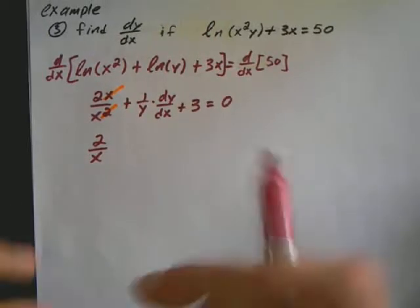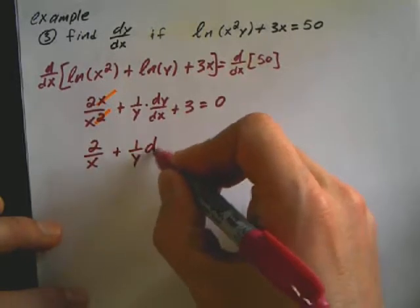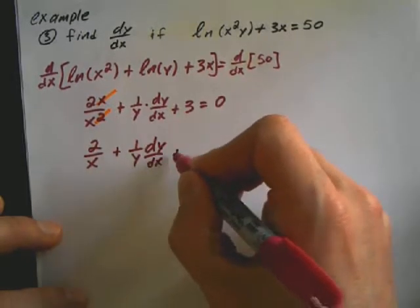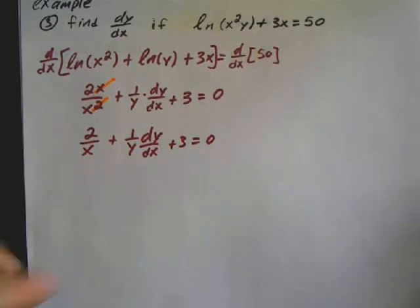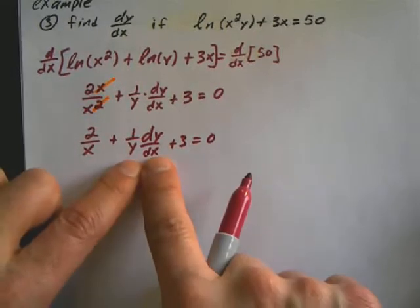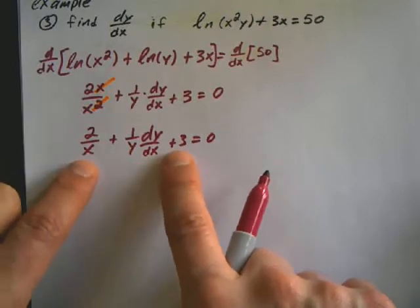So continuing with the problem. 2 over x plus 1 over y dy/dx plus 3 is equal to 0. And if you remember, the general strategy is you want to isolate dy/dx. So you want to start moving non-dy/dx things over.